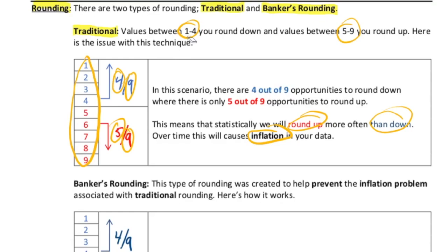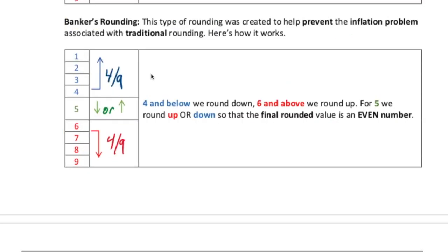Let's talk about how banker's rounding works. Banker's rounding isn't radically different than traditional rounding. We still round down if we have a number between one and four. The rule changes here - instead of five and above, it's six and above. So six to nine, we round up. What that does is that balances out the rounding a bit. Now we have a four out of nine chance of rounding down and a four out of nine chance of rounding up.